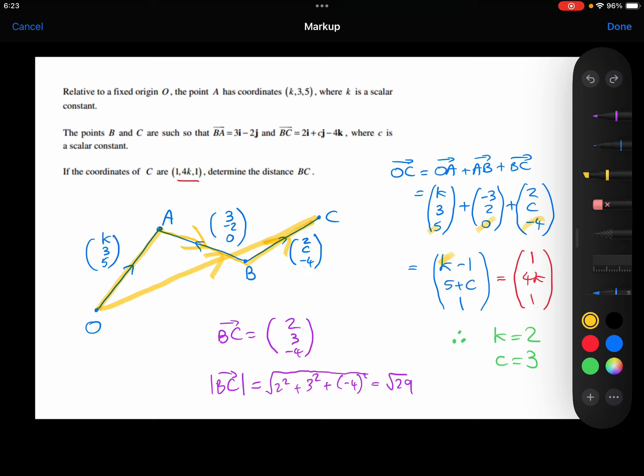So just comparing then, k minus 1 is the same thing as 1, which tells me that k must be 2. Now I know that k is 2, I know that 4 times k must be 8. Which means that 5 plus c must be 8, which means that c is 3.